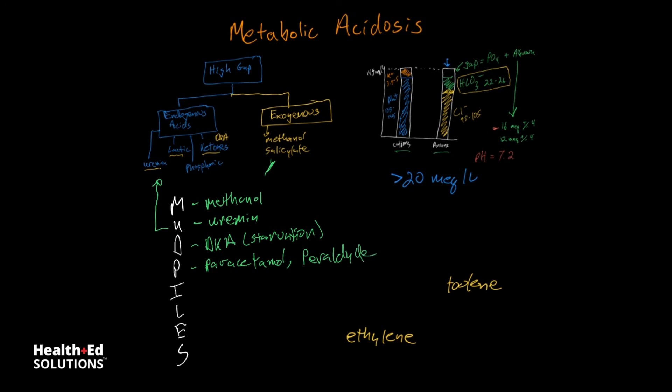And then I stands for isoniazid and iron. The L stands for lactic acidosis. And again, this is one of our endogenous acids. E stands for ethylene glycol. And it also can stand for ethanol, but ethanol is actually typically a secondary cause, caused by an increase of ketones. So it's again, our alcoholic ketosis. And then S stands for salicylate.